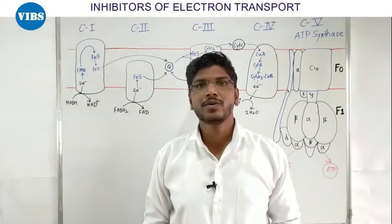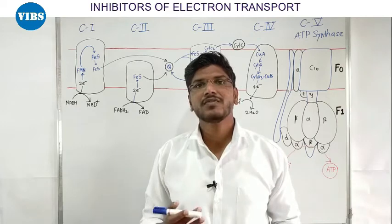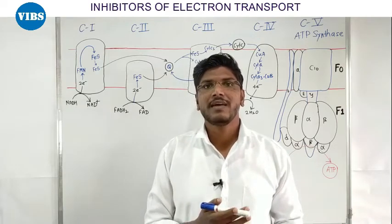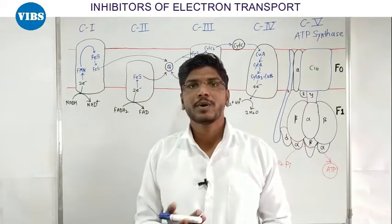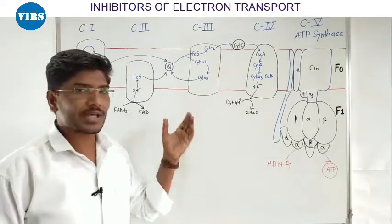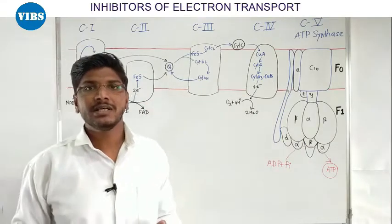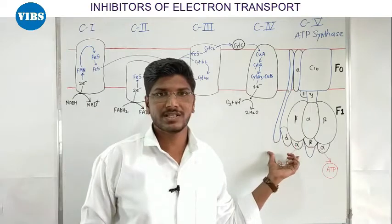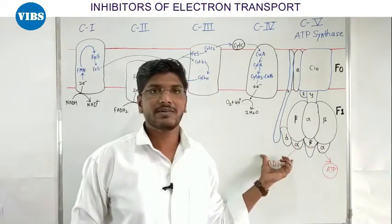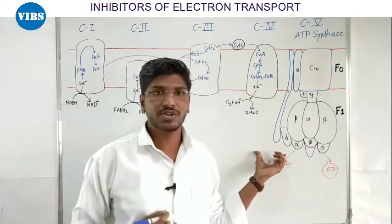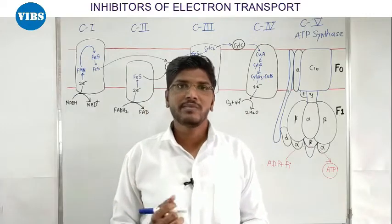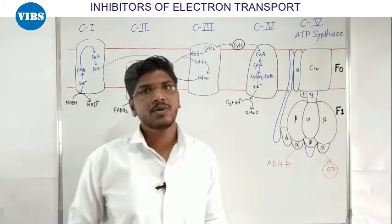Welcome back friends. In this video we will discuss about the inhibitors of electron transport system. Last video mein humne electron transport system and oxidative phosphorylation ko detail mein discuss kiya tha — waha pe protein complexes hote hai, electron kaise transport hote hai, yeh sari chize discuss ki thi. Then uske baad hamne ATP synthase jise hum F0F1 ATPase bhi kehte hai uske baare mein detail discuss kiya tha, uska structure, function, and binding change mechanism of ATP synthesis.